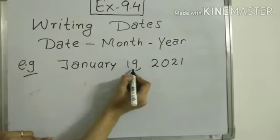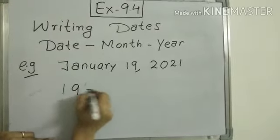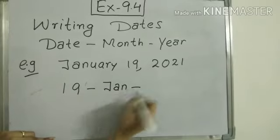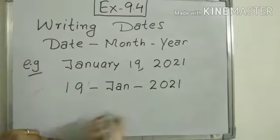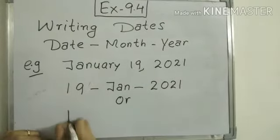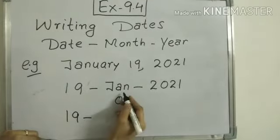or you can write as 19, January is the first month of the year, so you can write 01-2021.